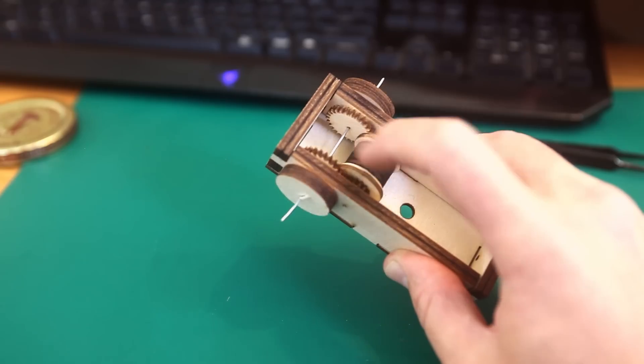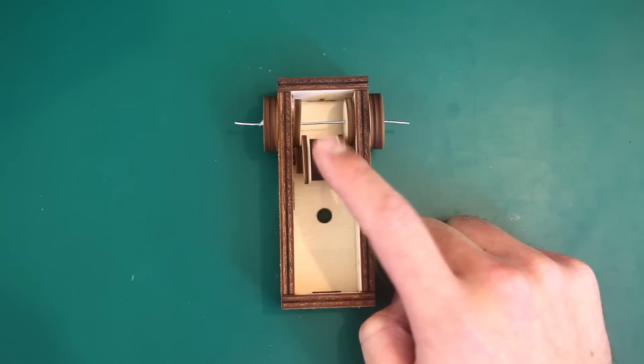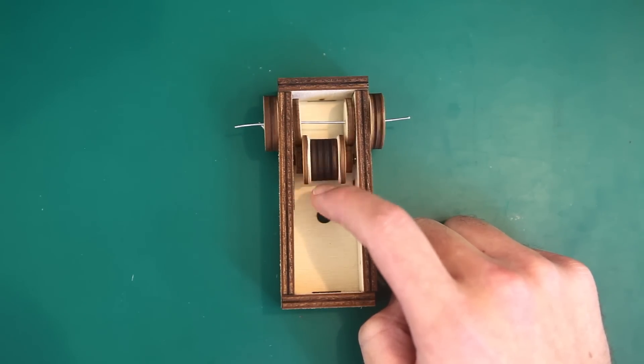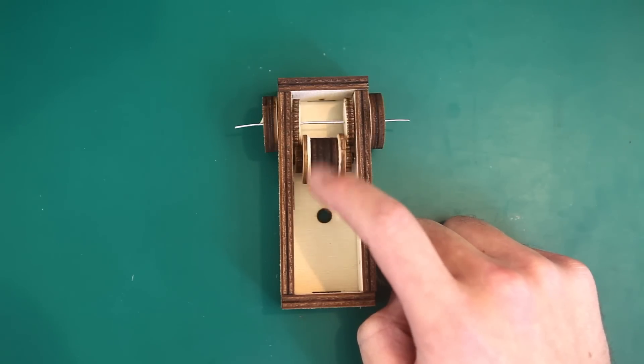Paper clips make pretty terrible axles. You can see the gears wobbling around, and occasionally they'll get stuck. I could use something less terrible than paper clips, but I think I'd equate that to supercharging a PT Cruiser.